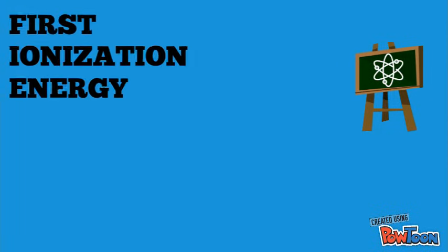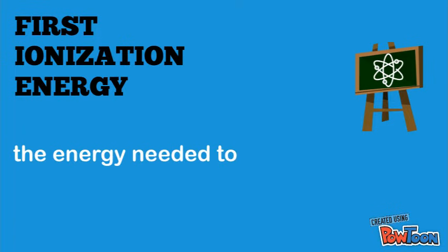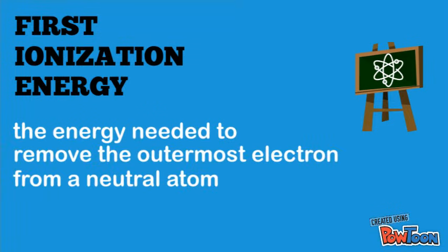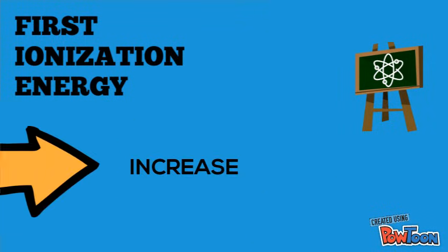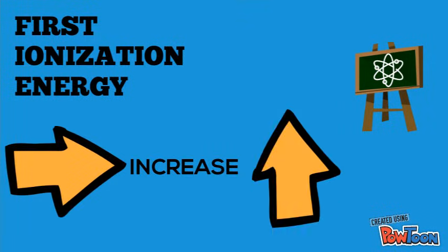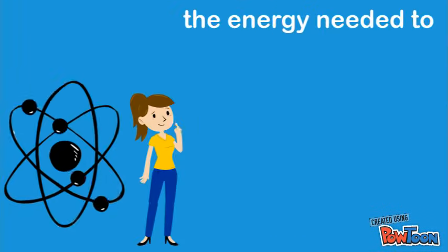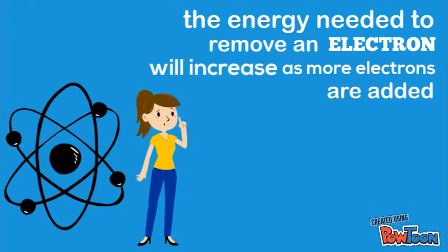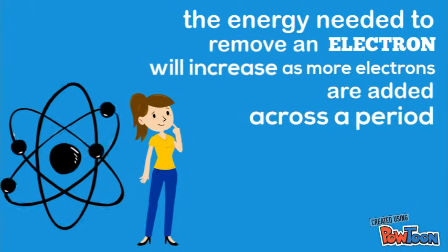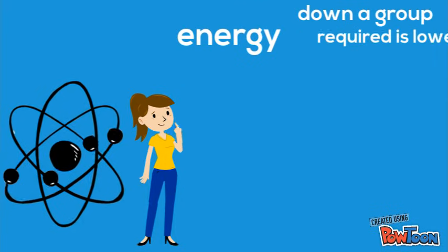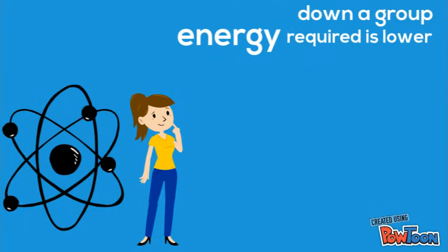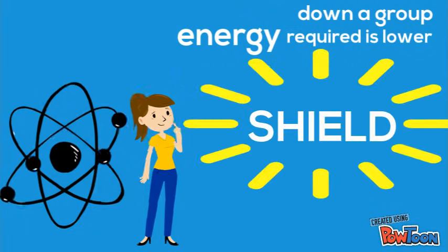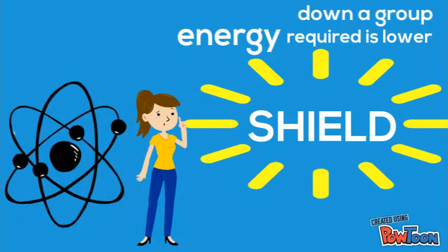Next up is the first ionization energy. It is the energy needed to remove the outermost electron from a neutral atom in the gas phase. The ionization energy will increase from left to right in a period and from bottom to top in a group. The energy needed to remove an electron increases as more electrons are added to the valence shell across a period. However, when going down a group, the energy required is lower because all of the extra orbital shells will begin to shield the valence electrons from the attractive forces of the nucleus.